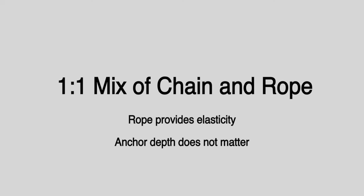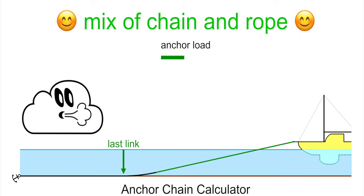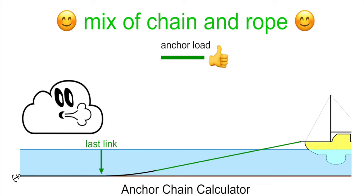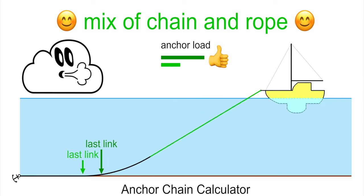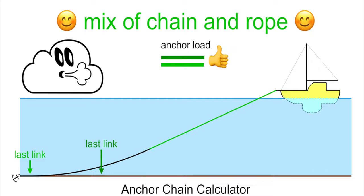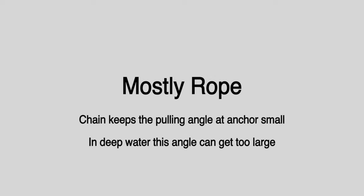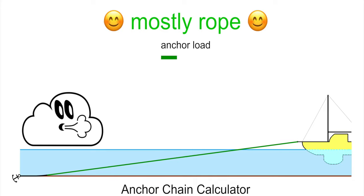A mix of chain and rope is ideal for absorbing dynamic loads caused by strong gusts or swells. The same is of course true when the chain is only a short precursor a few meters long.